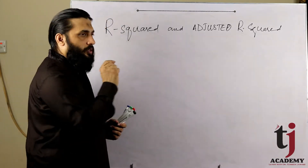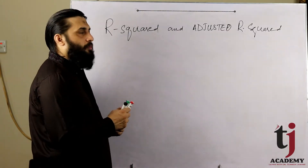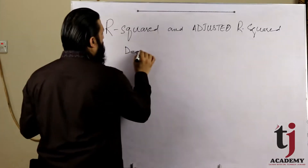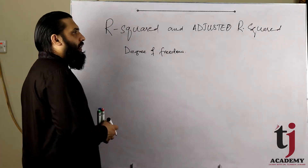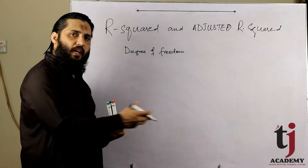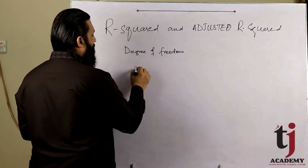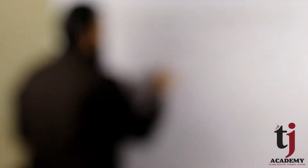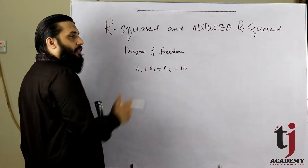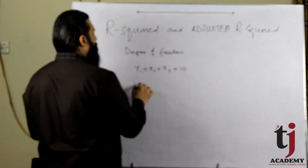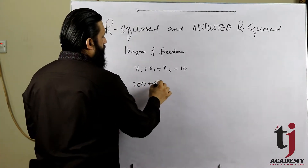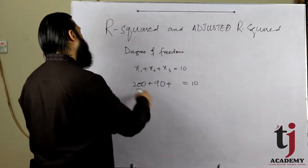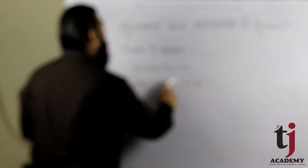To understand the difference between R² and Adjusted R², we have to first understand the concept of degree of freedom. The degree of freedom concept depends on the context — for example, if you look at three values x1, x2, x3 whose sum is 10, then x1 and x2 can take any value, but x3 is bound by that constraint.